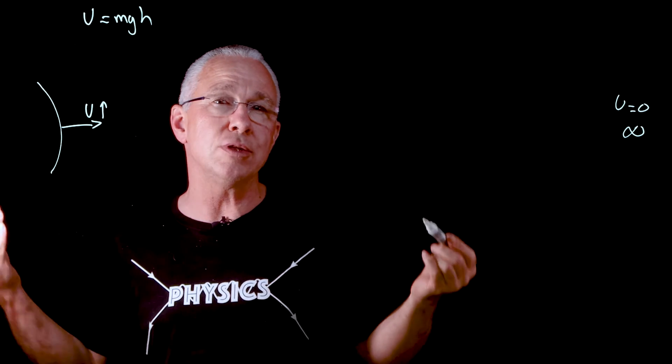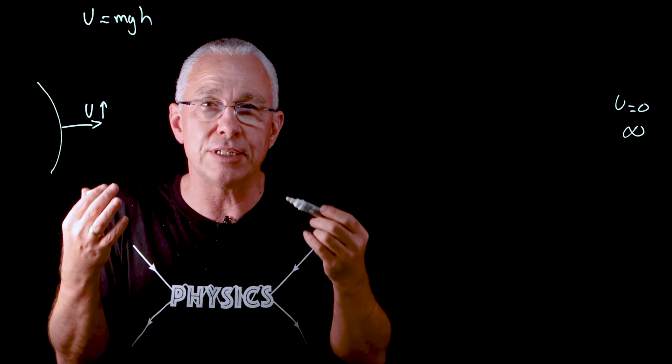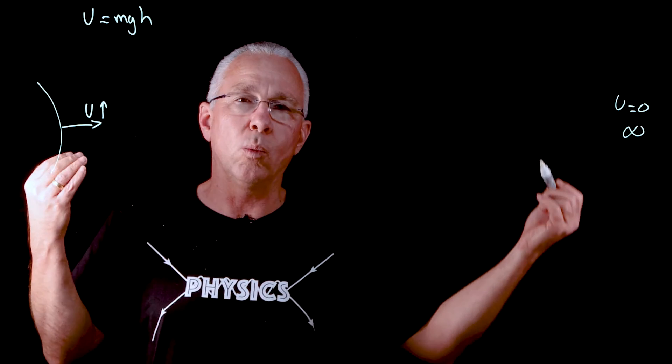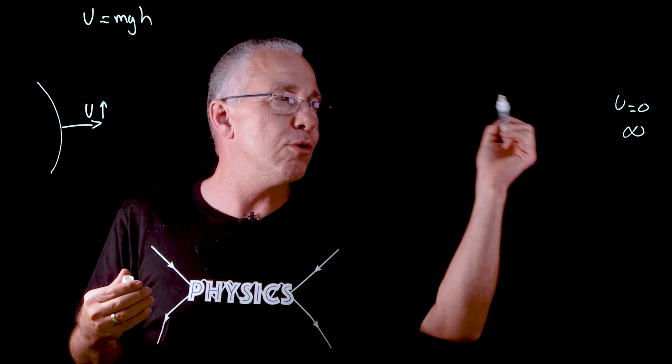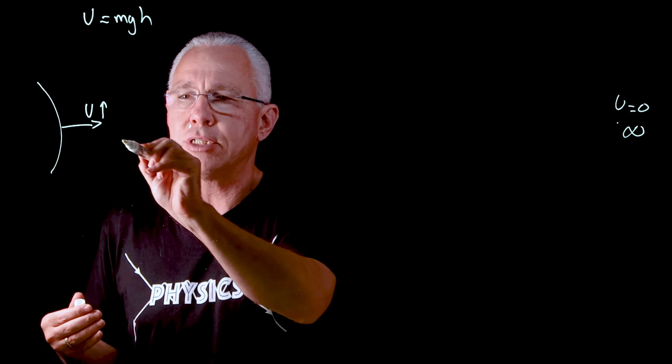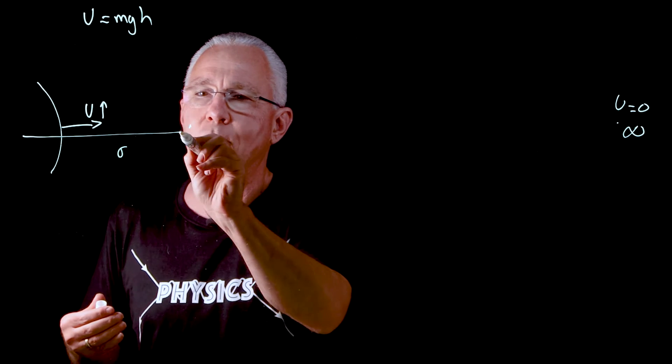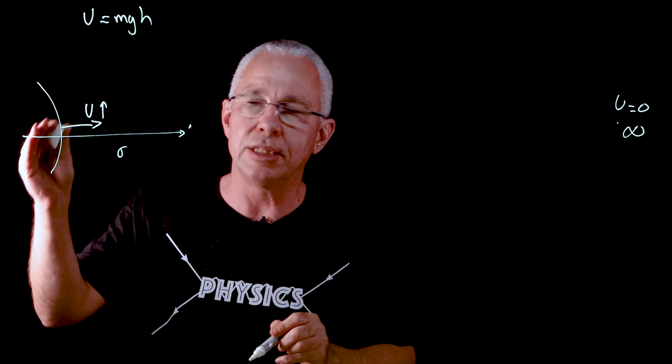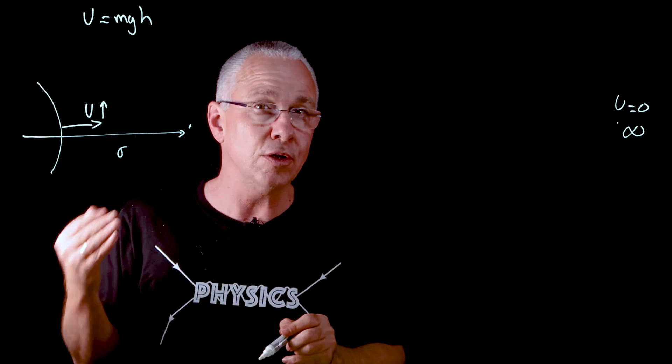And so that leads us to the definition of the gravitational potential energy. And it's basically saying, well, what's the work done by moving it from a point over here to a point over here, which is a distance of r, where r is equal to the distance from the center of mass, in this case the earth.